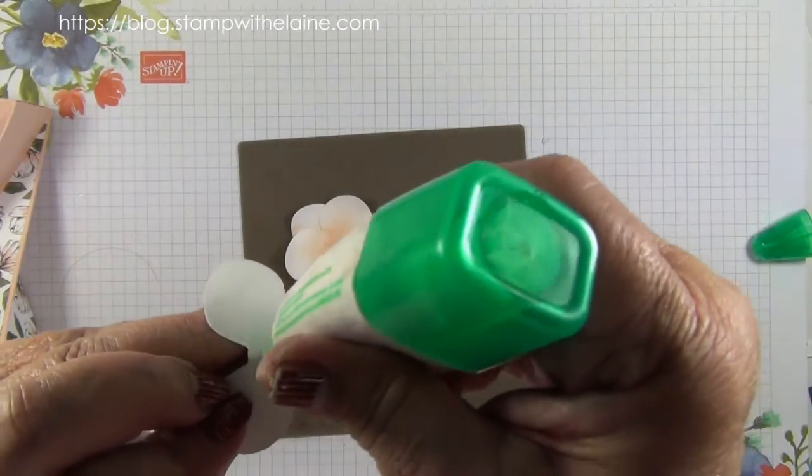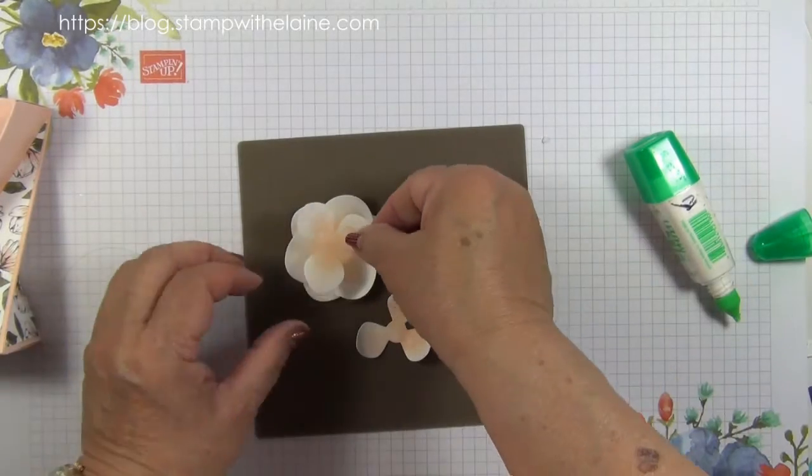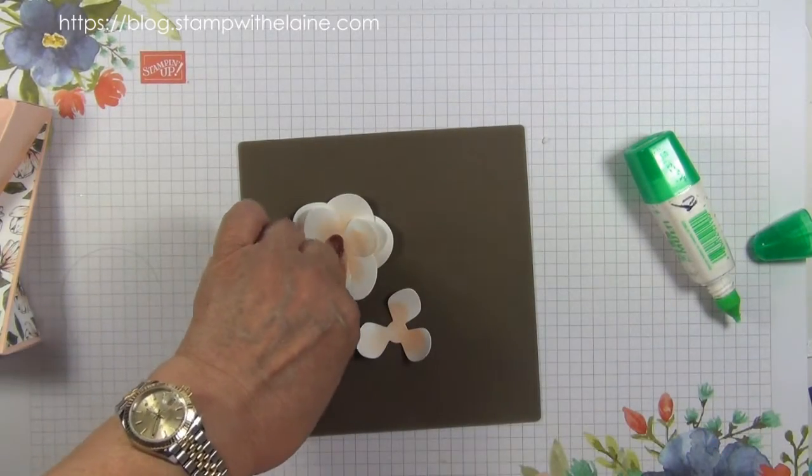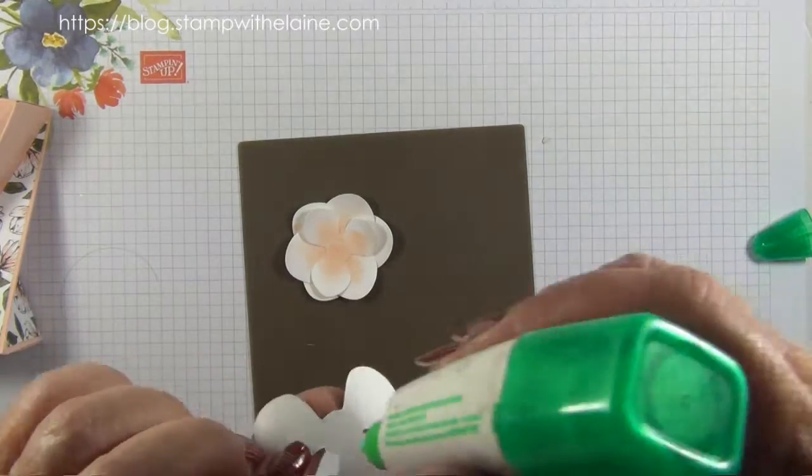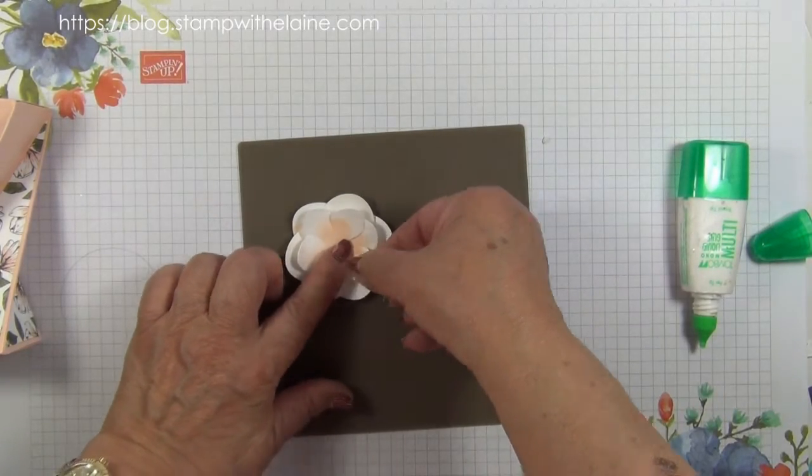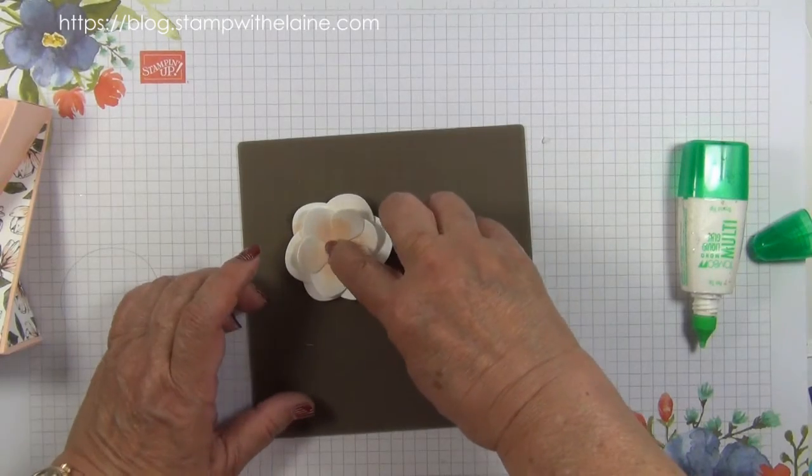Followed by the medium size one, again opposite. Hold it there while it bonds. And then the last one on top, again in between the other petals.